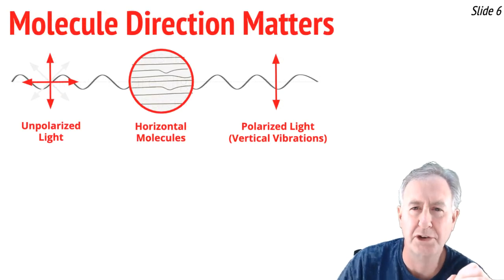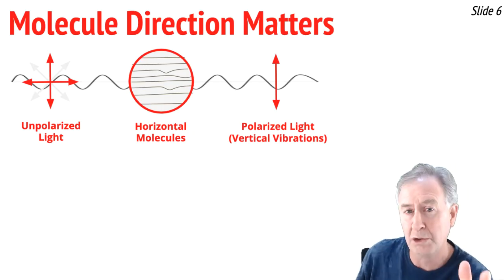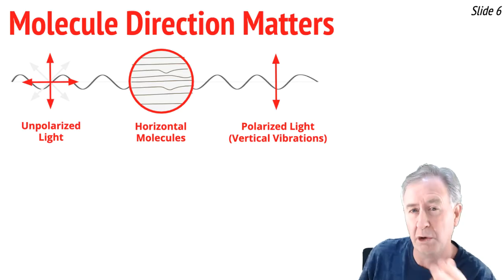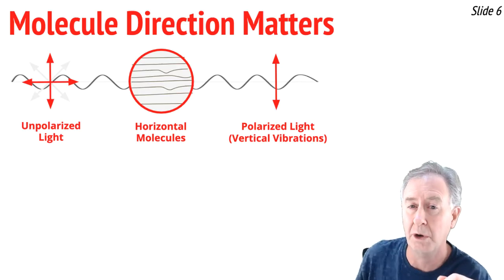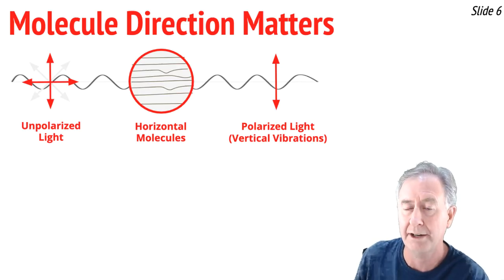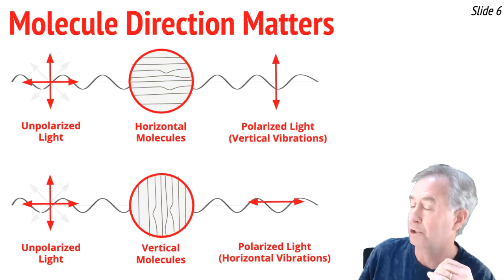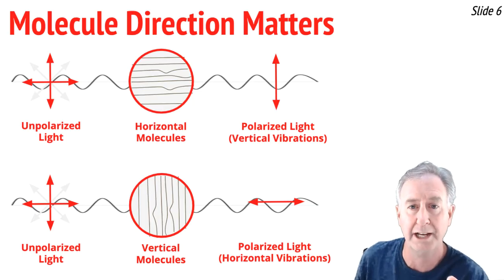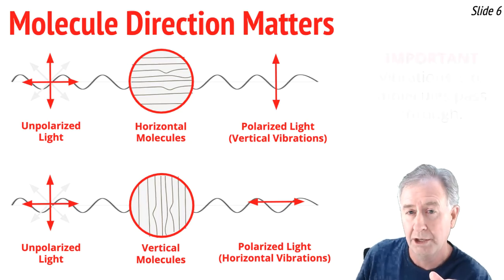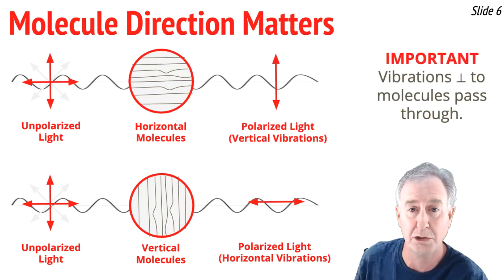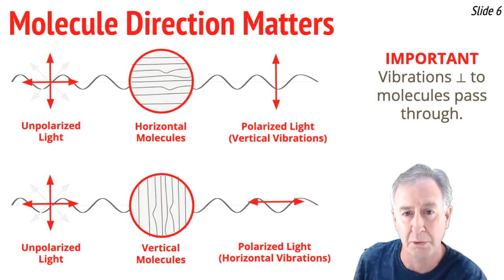The molecule direction is enormously important — it's what matters most. When you have light that's vibrating in a multitude of planes and it approaches a filter whose molecules are aligned horizontally, those horizontal molecules block horizontal vibrations, and what gets through are vertical vibrations. Half the light gets blocked, and the light gets polarized in a vertical direction. On the other hand, if the molecules are aligned vertically and you have unpolarized light approaching, then it's the vertical vibrations that get blocked, and the horizontal vibrations get through. It's only the vibrations that are perpendicular to those molecules that pass through the filter.